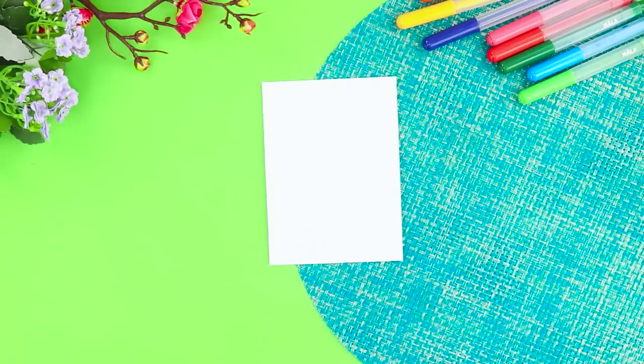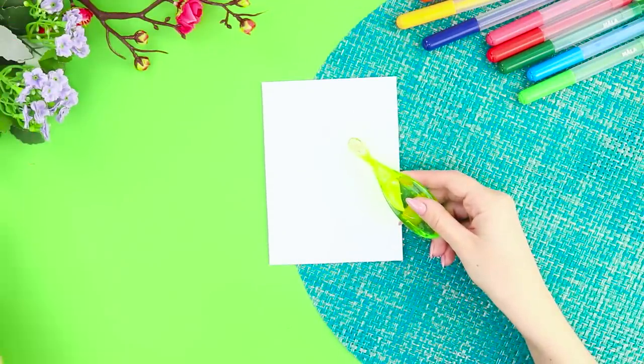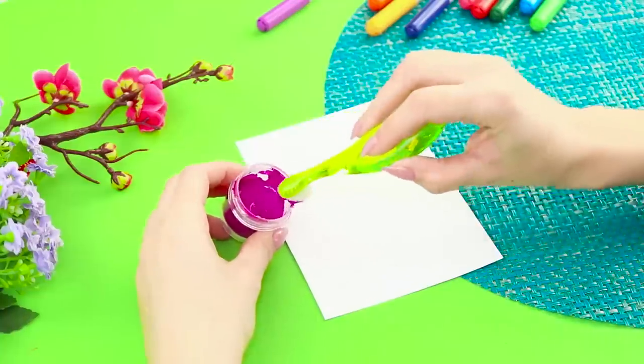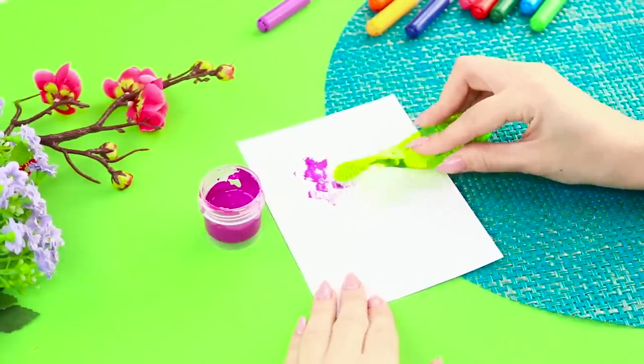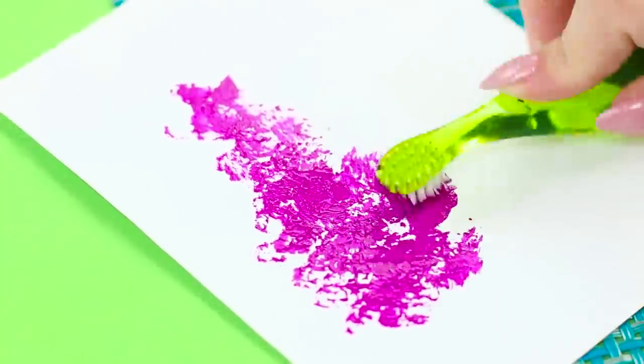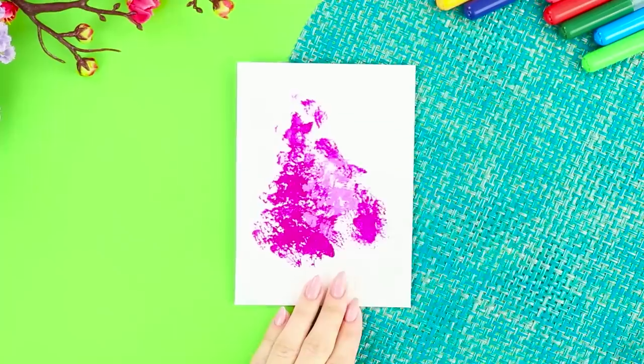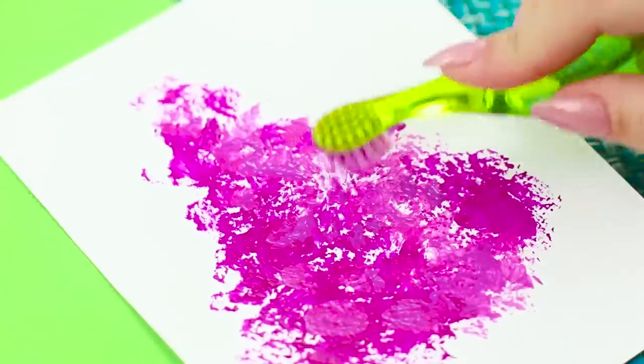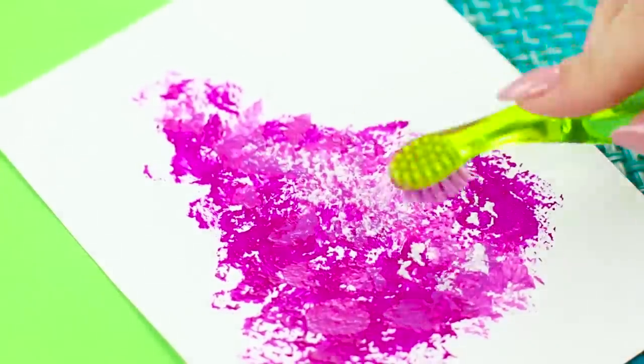For the next idea, take a piece of paper, a brush, and paint. Dip the brush in paint and make a triangular pattern on paper. Try to distribute the paint evenly on the paper. Now add highlights using lighter paint and shade the picture in a darker color.